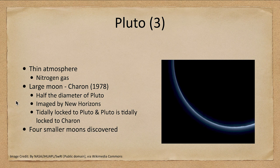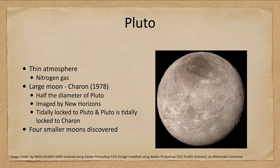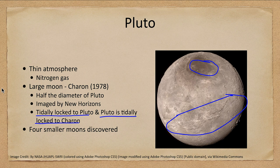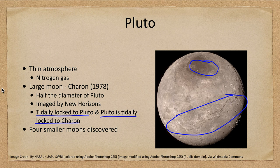Pluto has a number of moons, including the large moon Charon, discovered in 1978, which looks in many ways a lot like Pluto — showing signs of activity, some heavily cratered regions, some cracking on the surface, and some flatter areas. Charon is tidally locked to Pluto and Pluto is tidally locked to Charon — they always keep the same side facing each other. This means if you're on one part of Pluto you can see Charon sitting still in the sky, but on the other side you would never see it rise or set, similar to geosynchronous satellites.